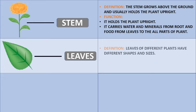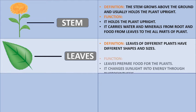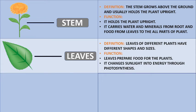Leaves. The leaves of different plants have different shapes and sizes. Their functions are: they prepare food for the plant and change sunlight into energy through the process called photosynthesis.